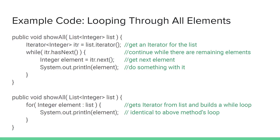To demonstrate the basic navigation functionality of an iterator, I have two examples of methods that both do the same thing. They both use an iterator to navigate through a list one element at a time and print out each element on its own line. In the first example we're explicitly calling the list's iterator method to return an iterator that navigates over the same kind of element stored in the list. This is a list that holds integers, so we're getting an iterator that also iterates over integers.